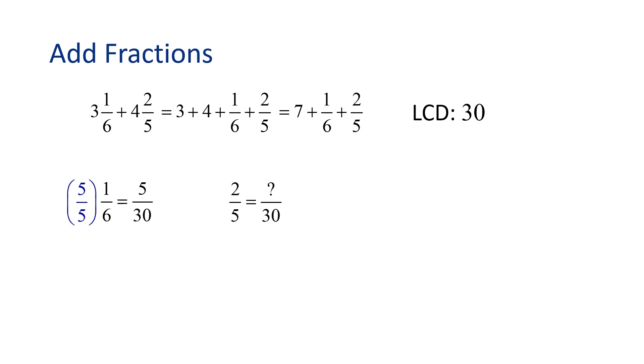Now let's write 2 5ths as an equivalent fraction with 30 as a denominator. Again, we know 5 times 6 is 30, so we will multiply 2 5ths by 6 over 6. 6 times 2 is 12, and 6 times 5 is 30. Therefore, 2 5ths is equivalent to 12 30ths. Okay, now our problem can be rewritten as 7 plus 5 30ths plus 12 30ths. We can add the numerators in the fractions that have the common denominator. This gives us 7 plus 17 30ths. Again, we don't need that plus sign between the whole number and the fraction to represent a mixed number. So instead, we say 7 and 17 30ths.